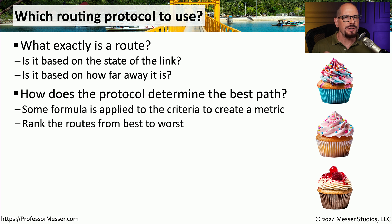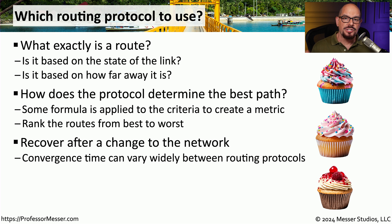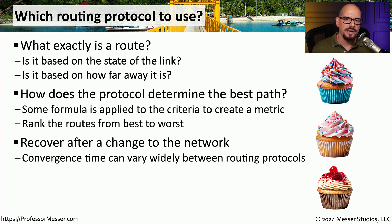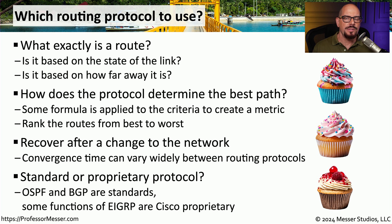Some routing protocols will use different criteria to determine the best way to get to a remote location. You might also find that some routing protocols are able to make changes very quickly if anything happens to the underlying infrastructure — adding a new router might take seconds or a minute depending on the protocol. We also need to take into account the type of router being used. Some routing protocols such as BGP and OSPF are very common and can be used across many manufacturers' devices, while some such as EIGRP may work best in a Cisco-centric environment.